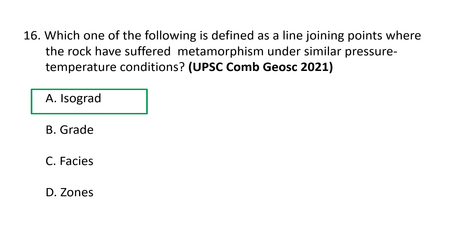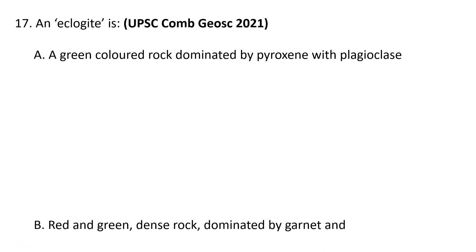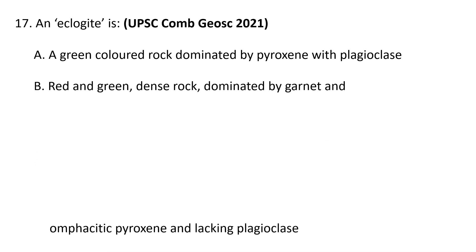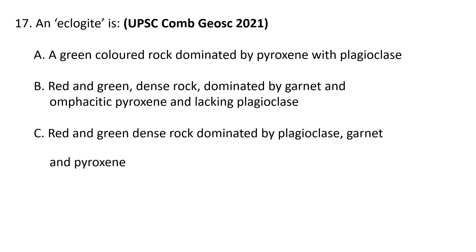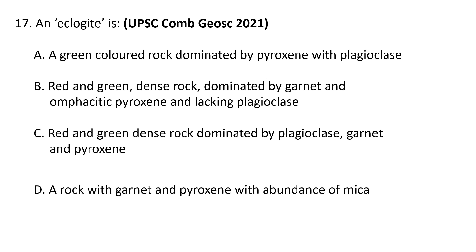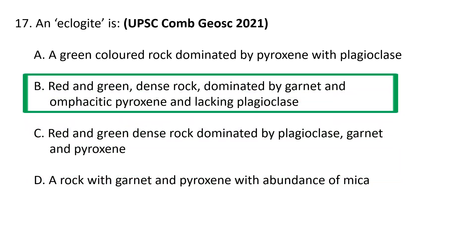Question 17: An eclogite is: (a) a green colored rock dominated by pyroxene with plagioclase, (b) a red and green dense rock dominated by garnet and omphacite pyroxene and lacking plagioclase, (c) a red and green dense rock dominated by plagioclase, garnet and pyroxene, or (d) a rock with garnet and pyroxene with abundant mica. The correct option is B — eclogite is a red and green dense metamorphic rock containing granular minerals, typically garnet and omphacite pyroxene, and it typically lacks plagioclase.